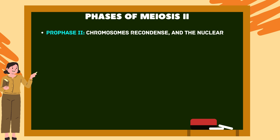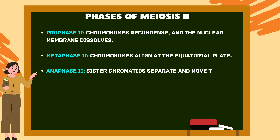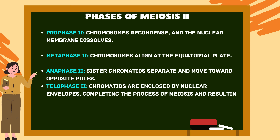Moving to phases of meiosis II — Prophase II: chromosomes recondense and the nuclear membrane dissolves. Metaphase II: chromosomes align at the equatorial plate. Anaphase II: sister chromatids separate and move toward opposite poles. Telophase II: chromatids are enclosed by nuclear envelopes, completing the process of meiosis and resulting in four haploid daughter cells.